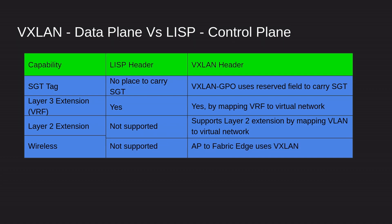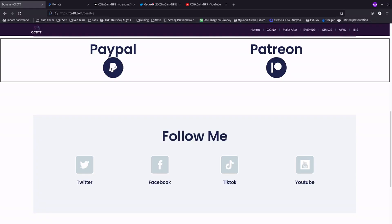For Wireless, LISP does not support it, but VXLAN supports AP Fabric Edge using VXLAN. This is a significant advantage, because essentially every company today has a wireless network. If you want to deploy SD Access, that's why Cisco went with VXLAN instead of LISP — VXLAN is able to do far more than what LISP can do.